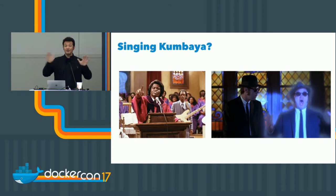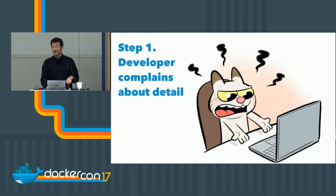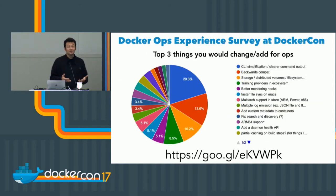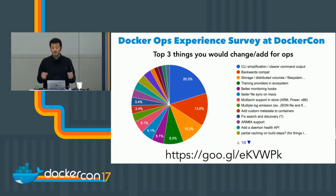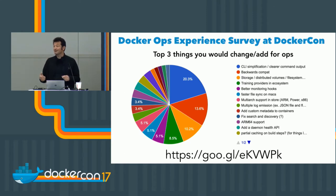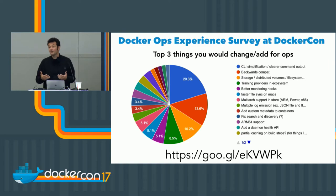It's been a very positive thing so far — but is it all about singing Kumbaya? We're actually here to build and fix stuff. Salomon talked about the development improvement process at Docker: people complain about details, we fix the details, and we repeat forever. What does it mean for apps? We sent out a survey with one question: the top three things you would change or add for apps. The top three items were CLI simplification, backwards compatibility, and storage/volume/distributed systems.